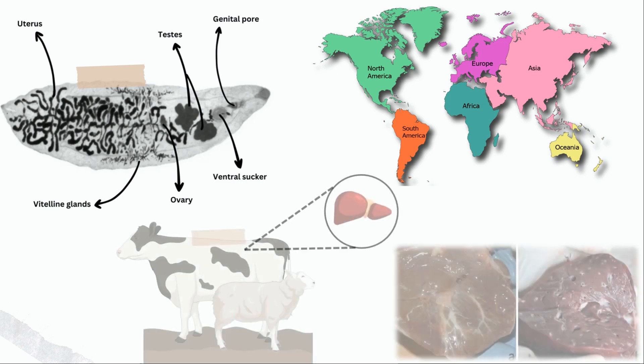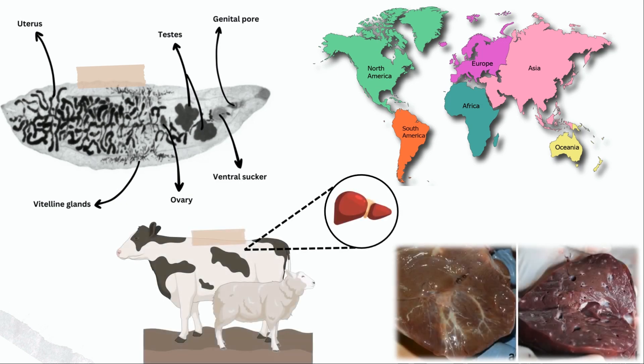Ruminants, especially cattle and sheep, are the normal definitive hosts of Dicrocoelium species. Apart from humans, apparent infections have been identified in various non-human primate species and domestic dogs.